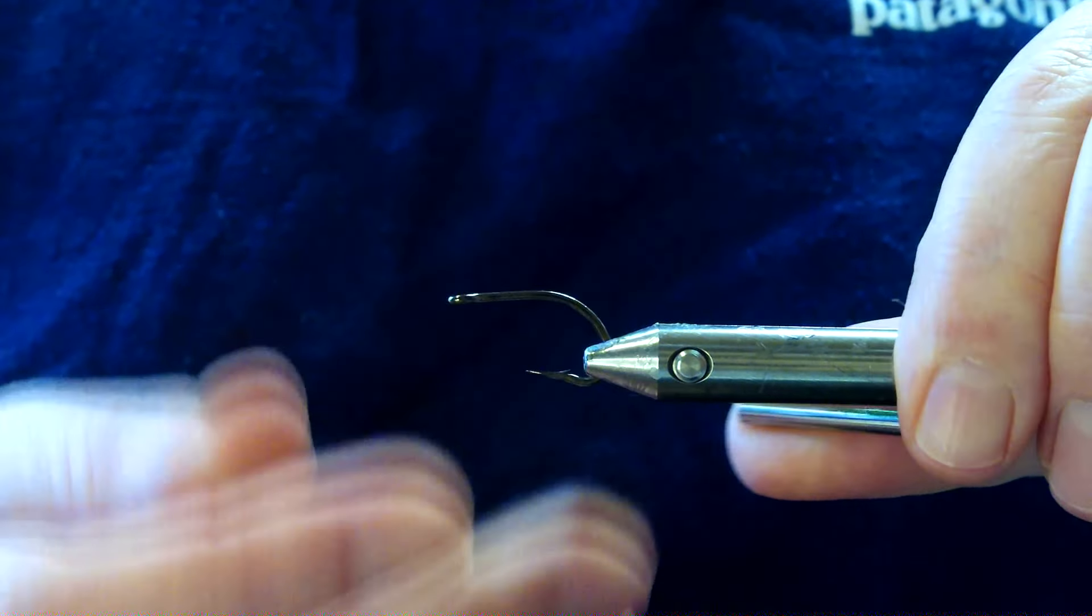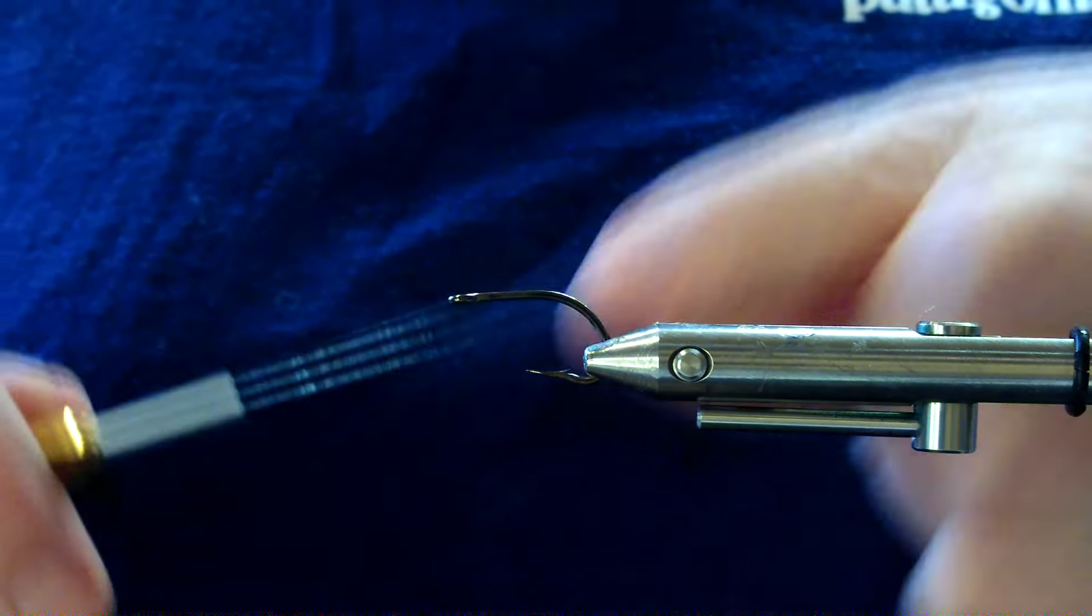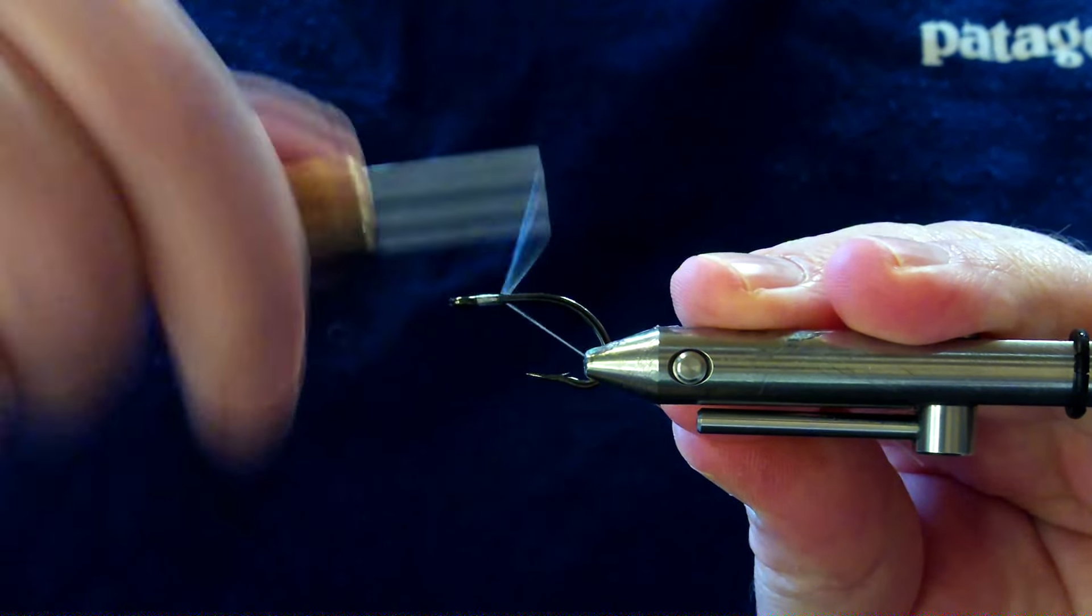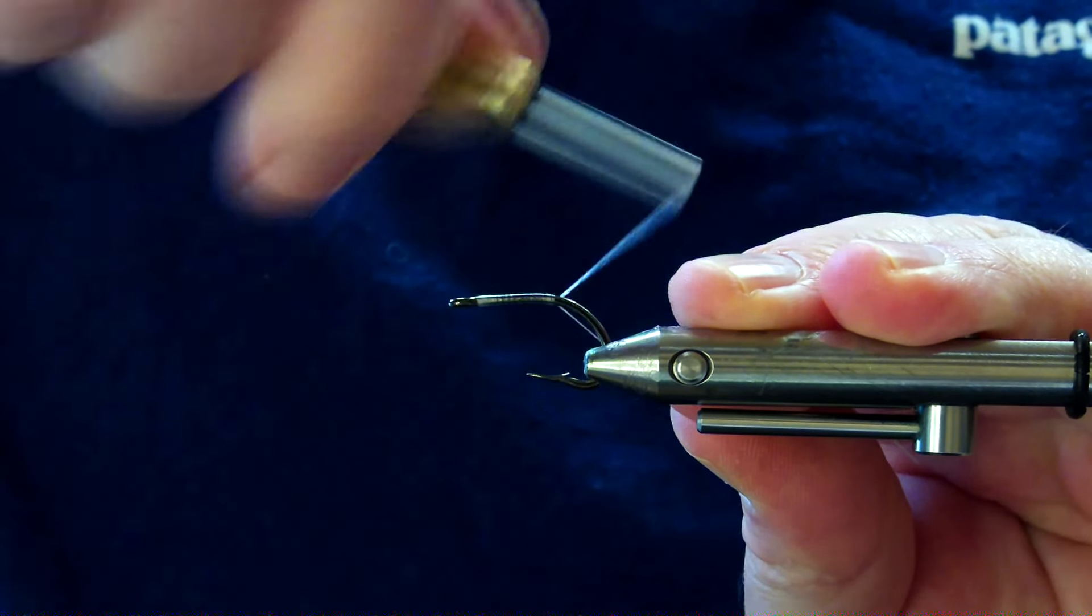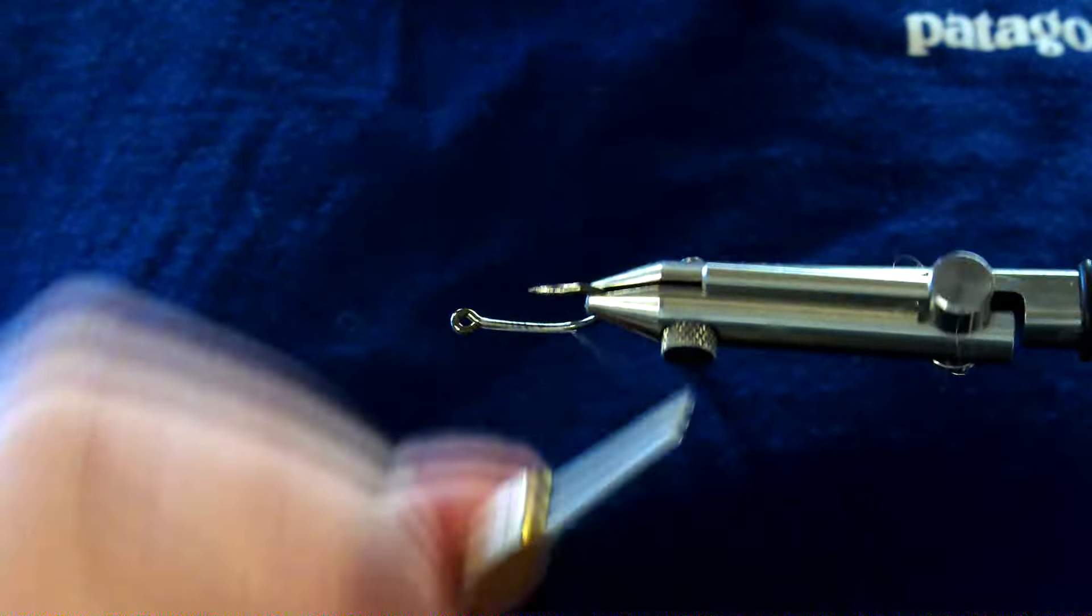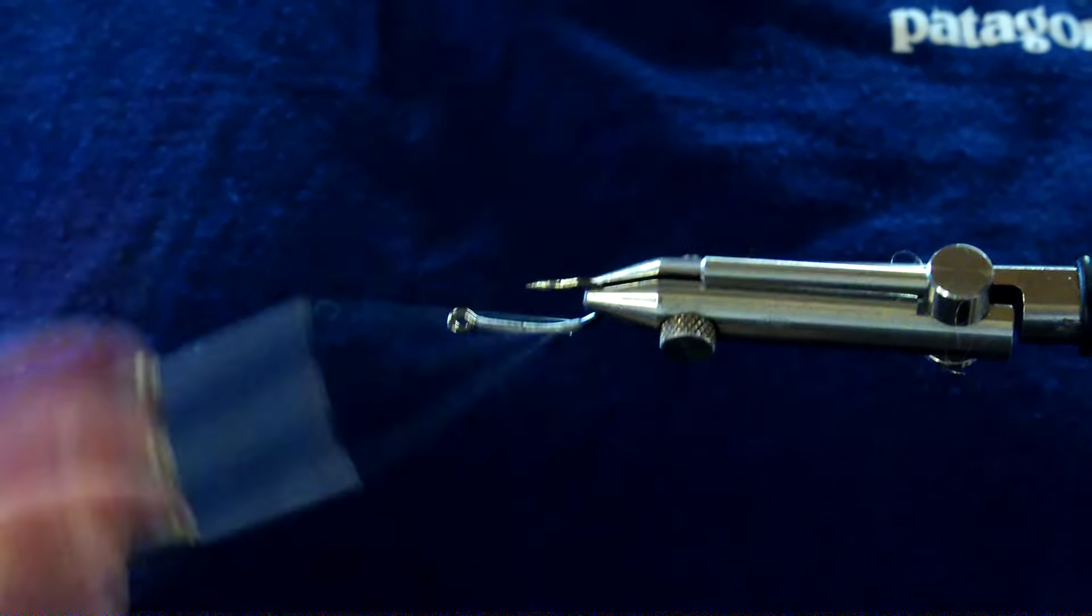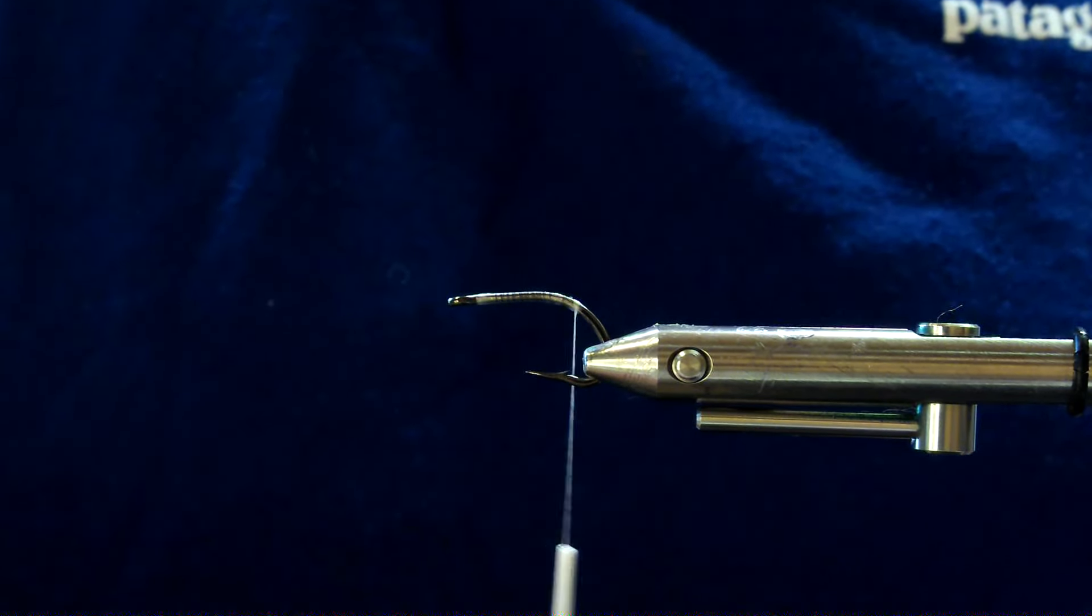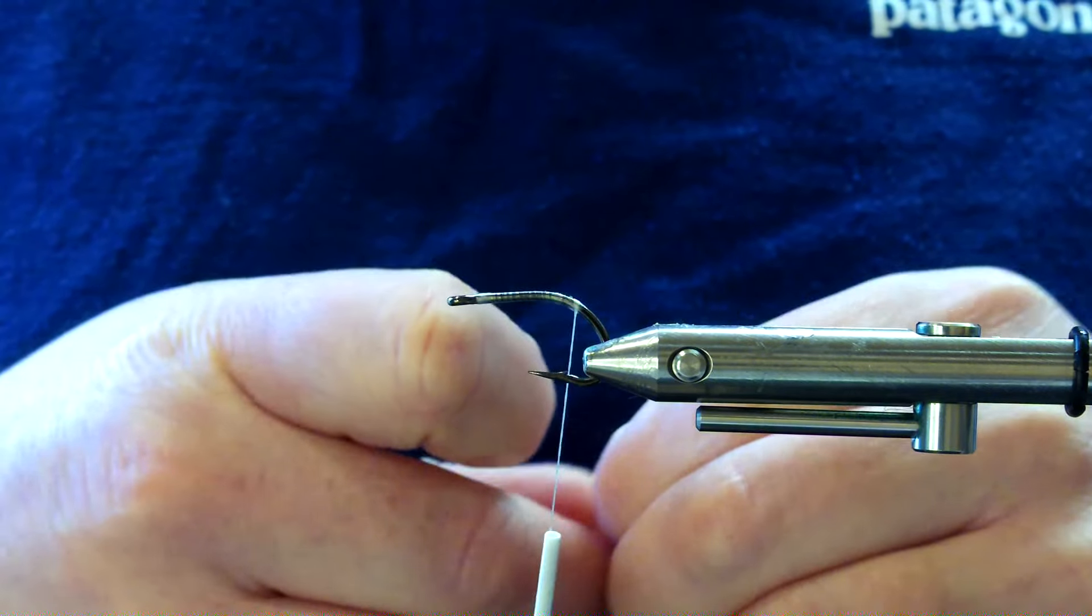As I said, the hook is the Owner Fly Liner in a size 4. Can go 6 as well but they are quite small hooks, quite short shank, so yeah four is a pretty good size.